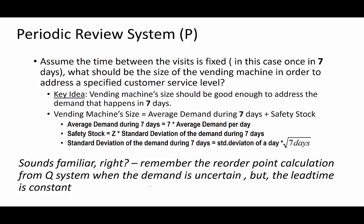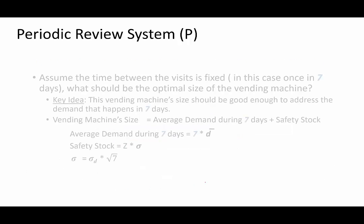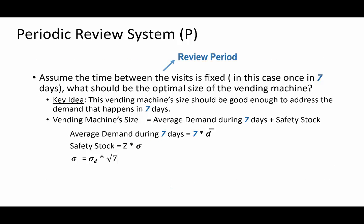Now let us put some notation into the formulas we have created. The time between the visits is called the review period. In this example, the review period is seven days — I'm going to call this P. So I'm going to replace seven with P wherever it appears.